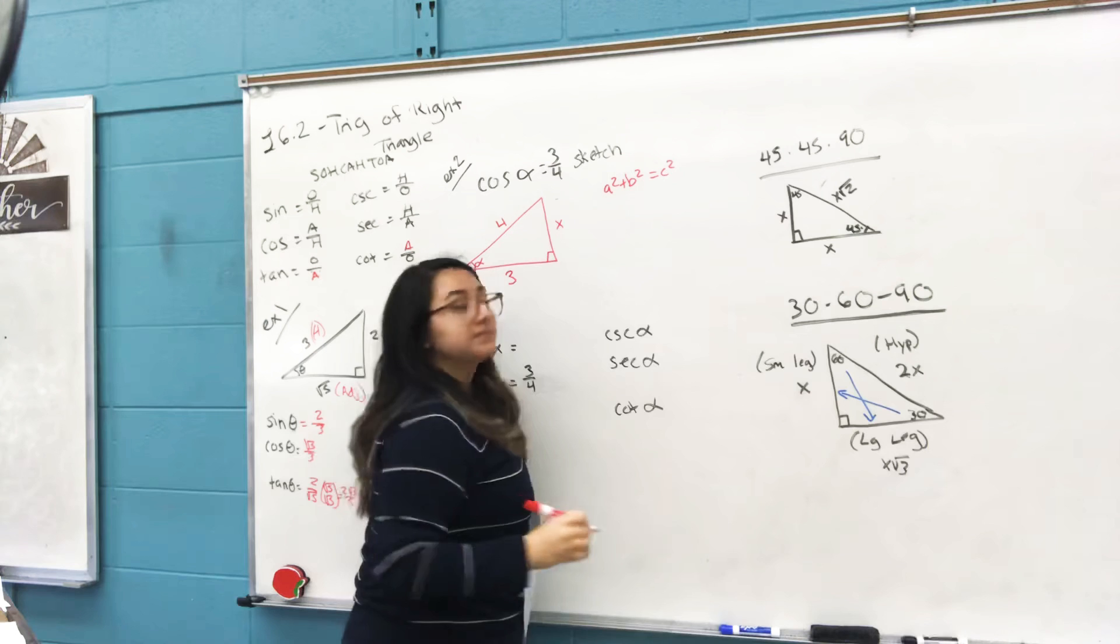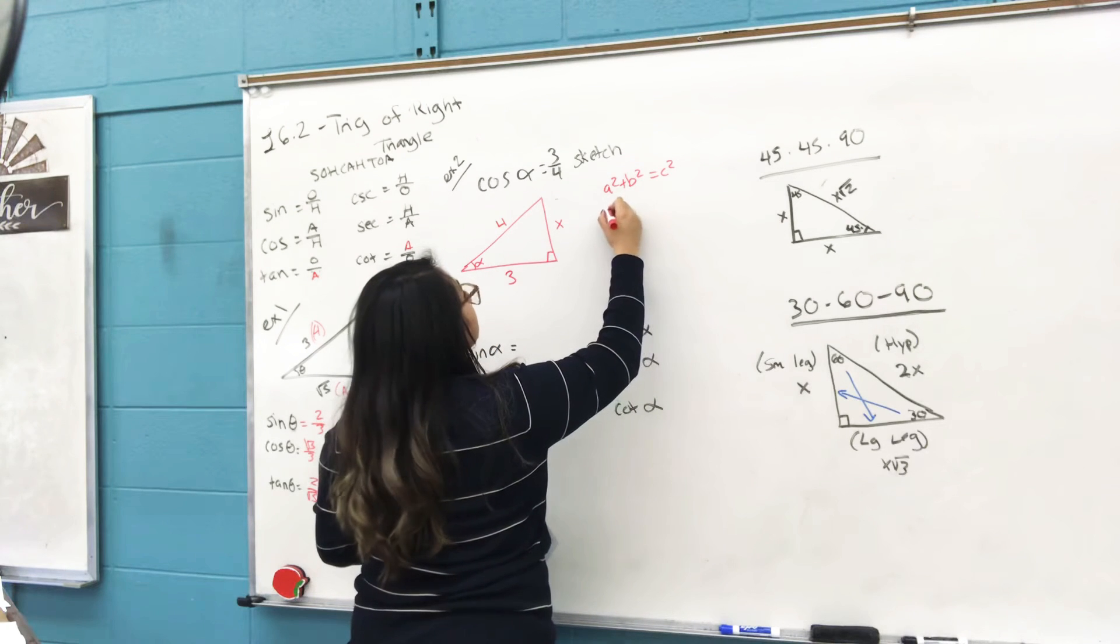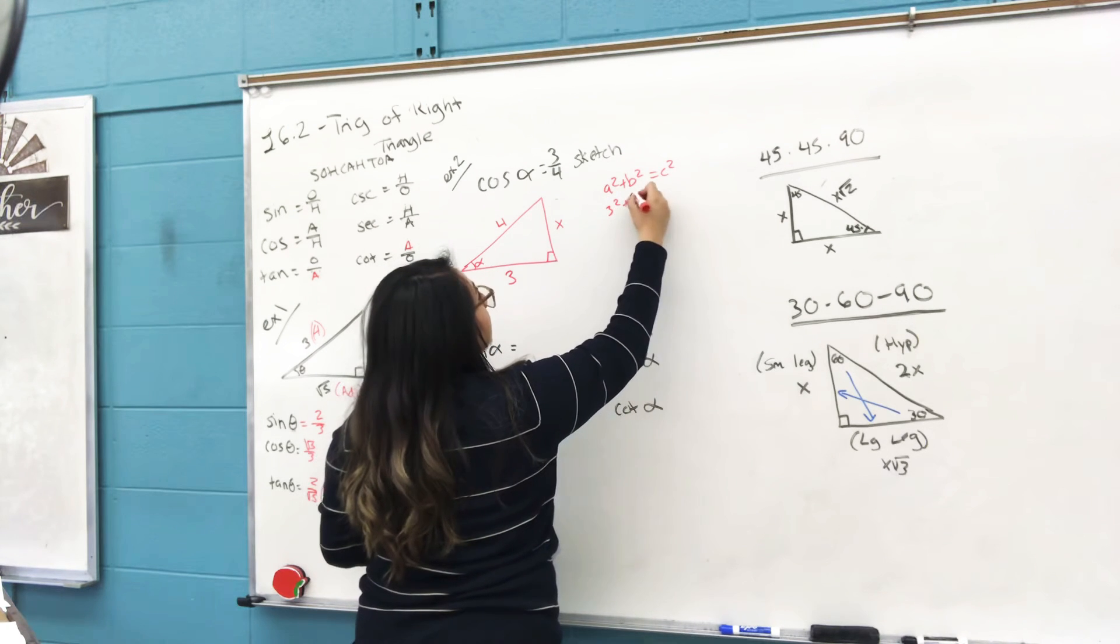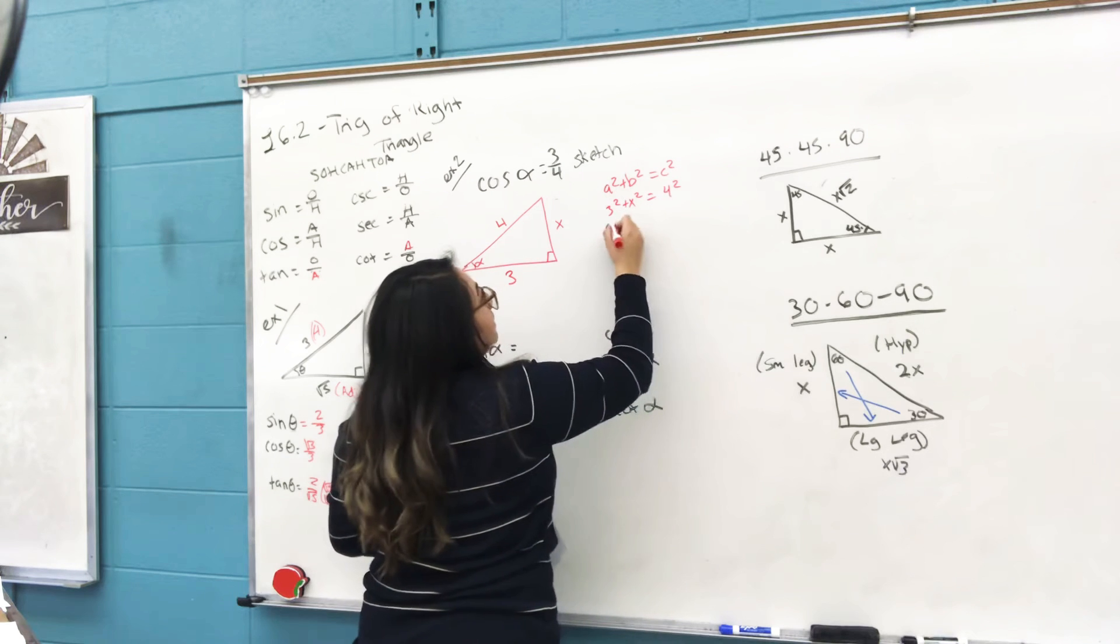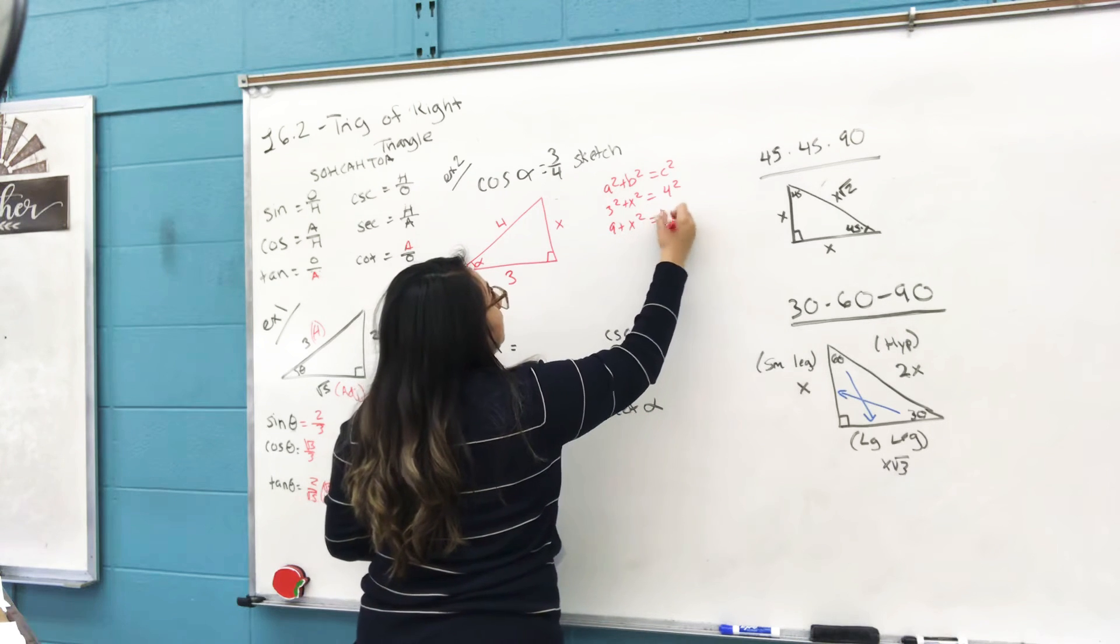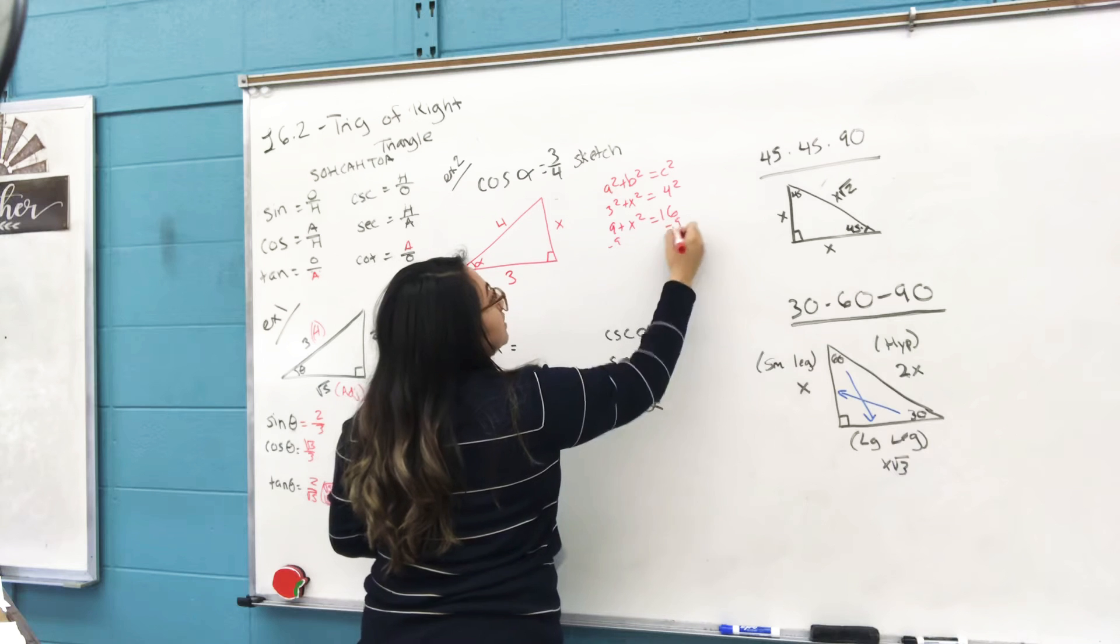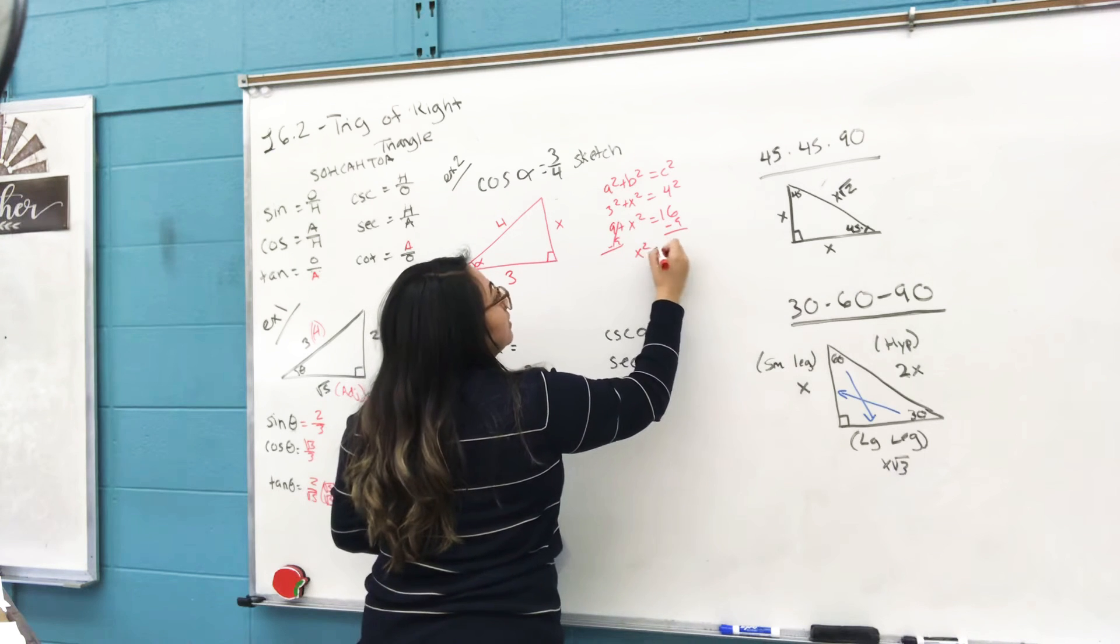Now to find that side, the best thing we can use is a² + b² = c². One side is 3², the next side is x², and your hypotenuse is 4². Then you get 9 + x² = 16.